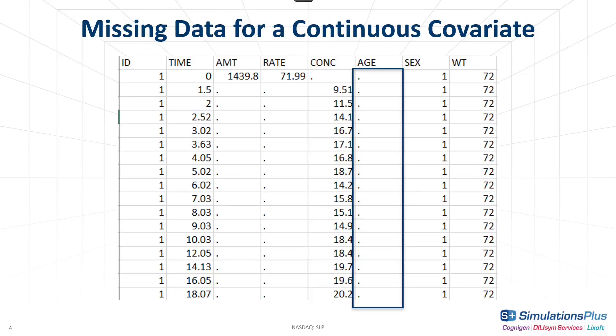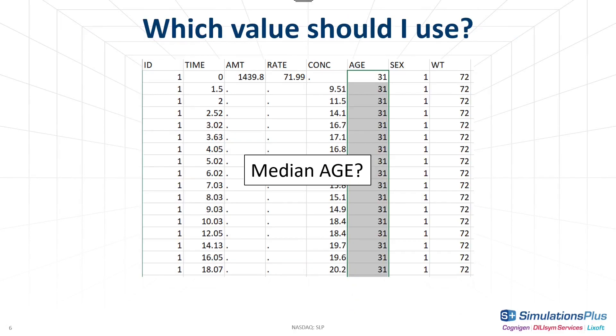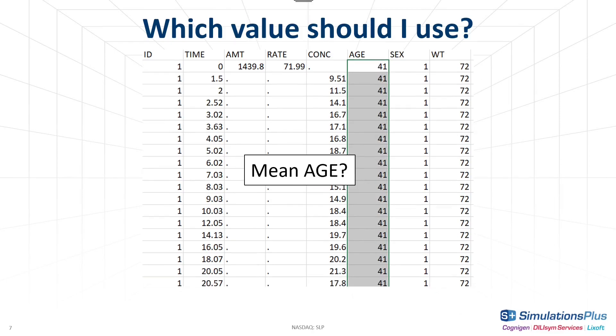For continuous covariates such as age, it is not possible to just have a dot for missing values. So you can for example decide here to assign a typical value which would be the median of age for all other individuals, which is in this case 31. But you could also decide to assign the mean age which is around 41.